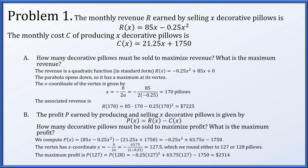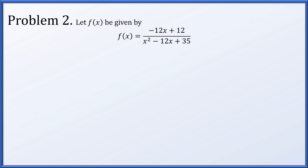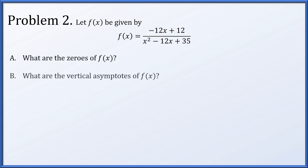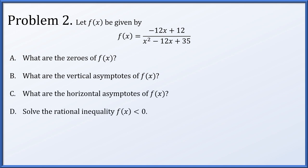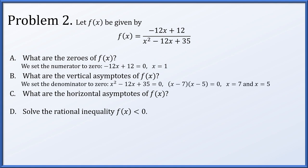Problem two: let f(x) = (−12x + 12) / (x² − 12x + 35). We find zeros by setting the numerator equal to zero, giving x = 1. For vertical asymptotes, we set the denominator to zero: x² − 12x + 35 factors as (x − 7)(x − 5), so vertical asymptotes are at x = 7 and x = 5.